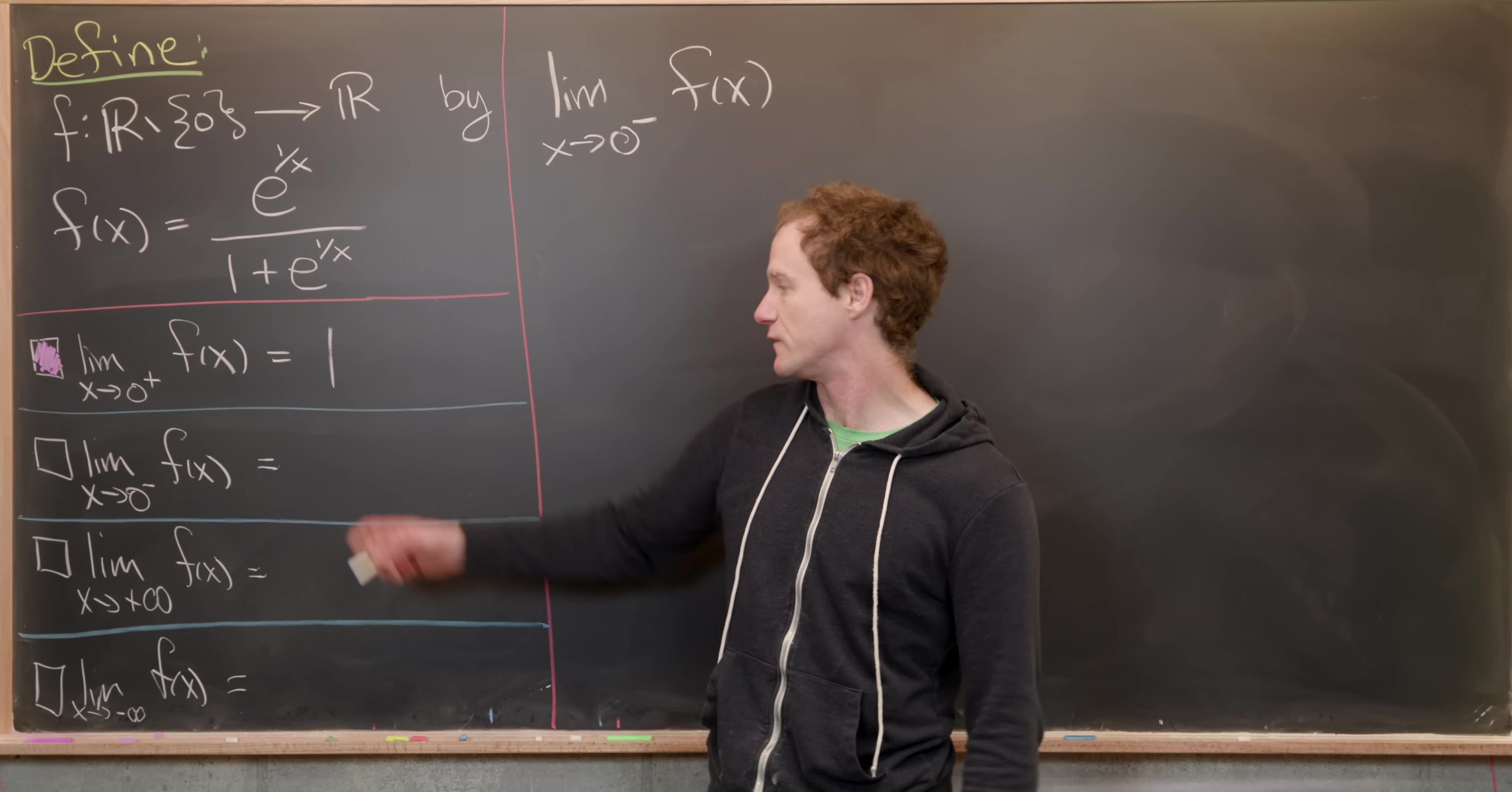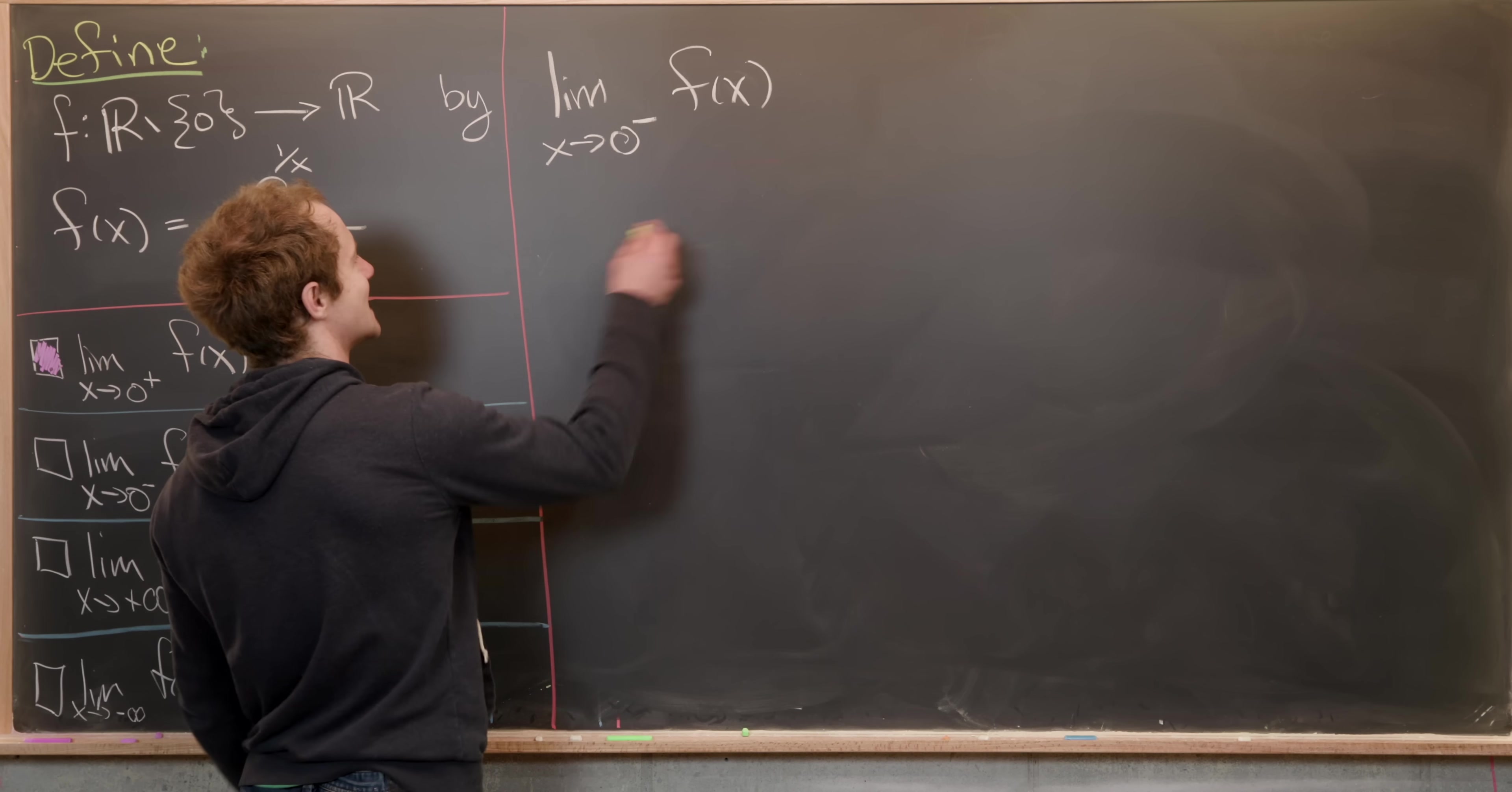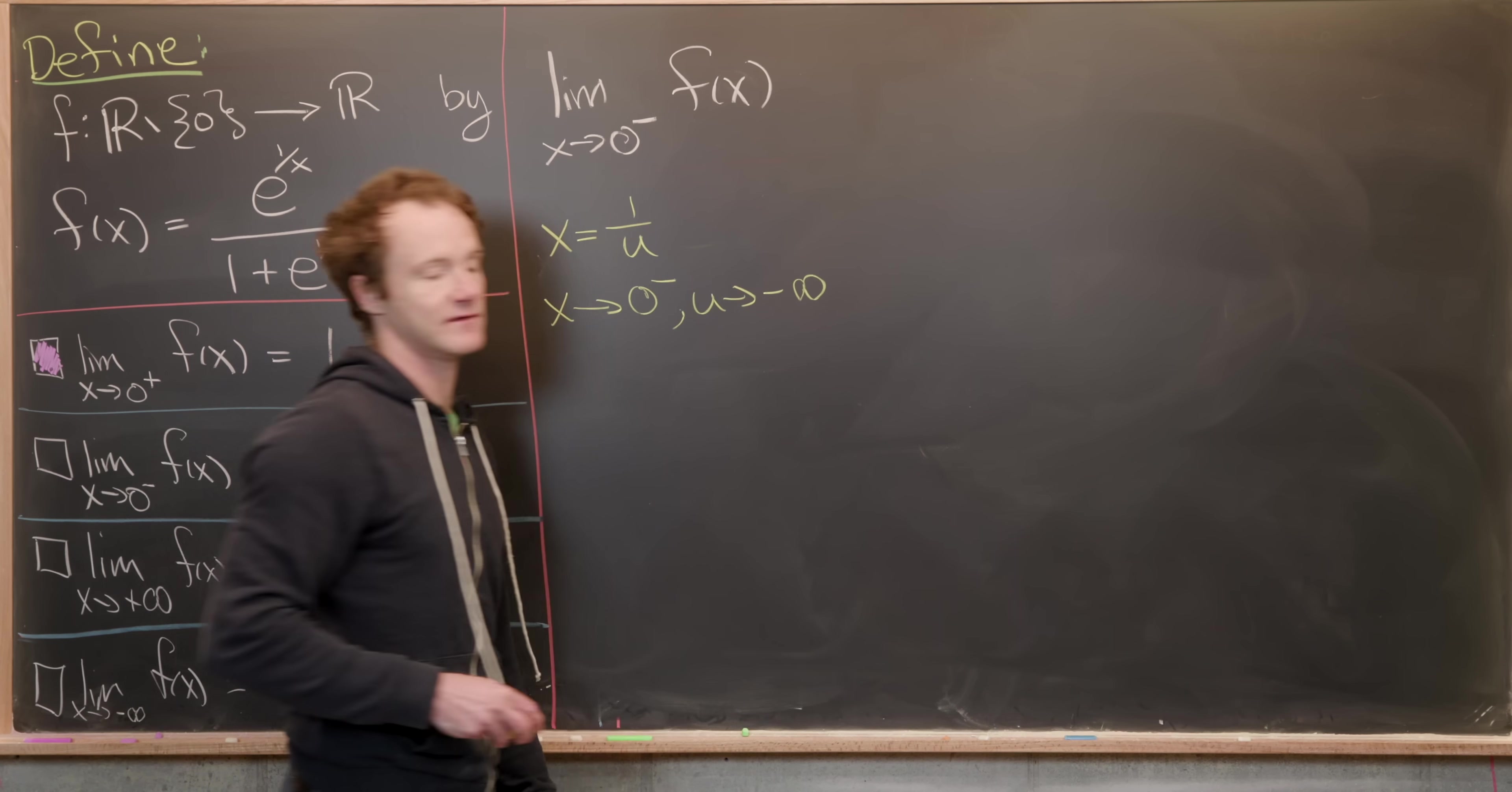Now we're ready to calculate the value of this left handed limit at zero. So in other words, the limit as x approaches zero from below. So we're going to do the same kind of setup where we do a change of variables. And we'll do exactly the same change of variables. We'll let x equal one over u. But in this case, if x is approaching zero from below, that makes u approach negative infinity.